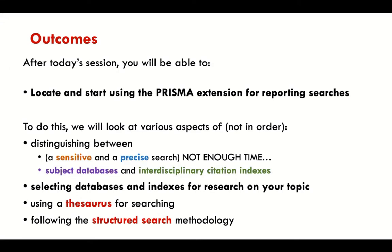We'll be talking a lot about subject databases and distinctions between databases, and citation indexes, because that comes into the protocol as well and into the PRISMA extension. What we try to do today is make sure you have the tools you need to fill out your PRISMA extension for reporting searches, which is absolutely necessary for systematic reviews, but hugely important for scoping reviews as well. I really recommend that you do a PRISMA extension for reporting searches whether you're doing a systematic or scoping review.